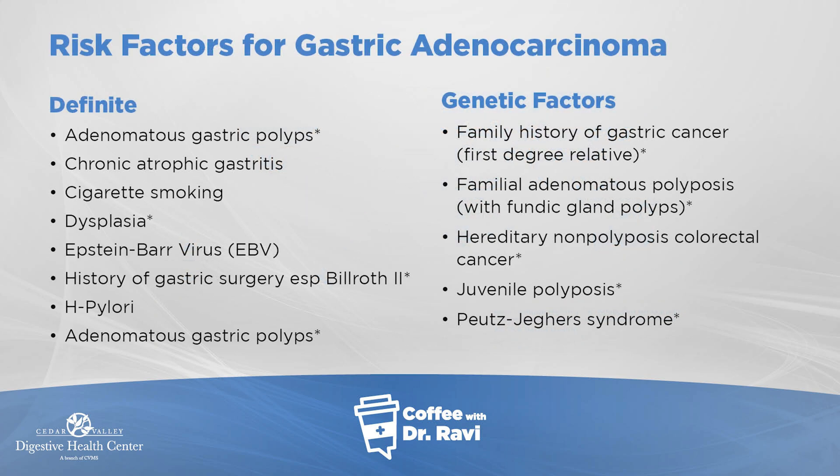What puts somebody at risk for gastric cancer? I'm dividing it as definite risk factors as well as probable and so on. In terms of definite risk factors, if there's a type of polyp in the stomach called an adenomatous polyp — these are growths; not all stomach polyps are risk factors for gastric cancer, but adenomatous polyps are.